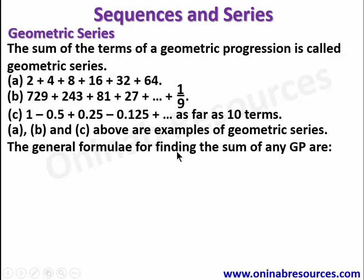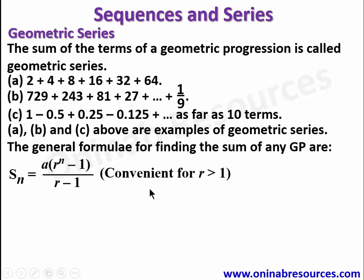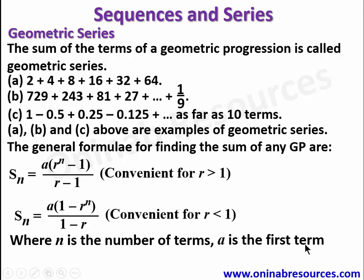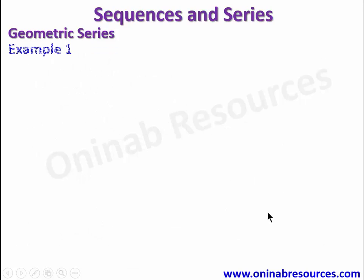The general formula for finding the sum of any geometric progression is: Sn = a(r^n - 1) / (r - 1), which is convenient for r greater than 1. Alternatively, Sn = a(1 - r^n) / (1 - r), which is convenient for r less than 1. Here, n is the number of terms, a is the first term, and r is the common ratio. These are the formulae we shall use in this video depending on the series.